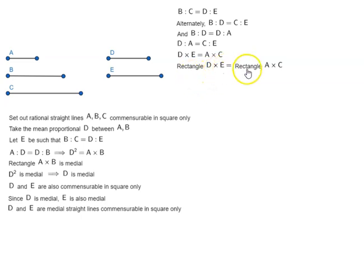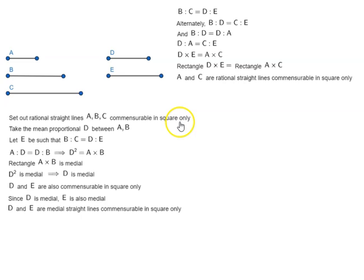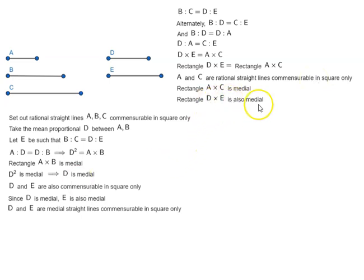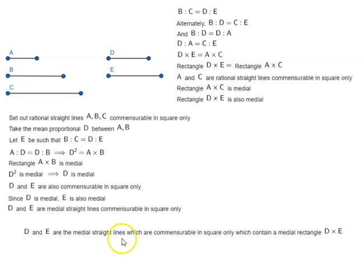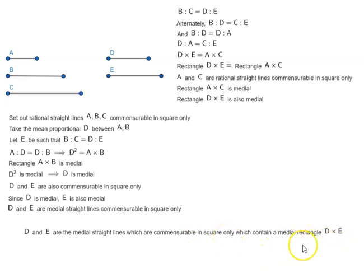Rectangle B by E is equal to rectangle A by C. A and C are rational straight lines commensurable in square only, because that is how we started off — we set out rational straight lines A, B, C commensurable in square only. So rectangle A by C is medial by the definition of medial. That means rectangle D by E is also medial. Since D by E is medial, D and E are the medial straight lines commensurable in square only which contain a medial rectangle. So we have found what was required — that is Proposition 28 of Book 10 of Euclid's Elements.